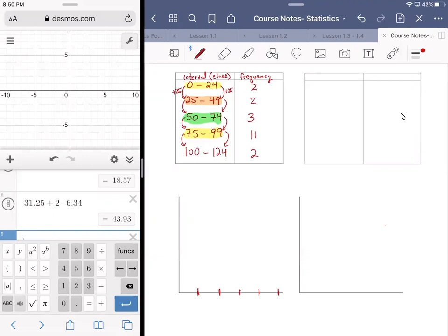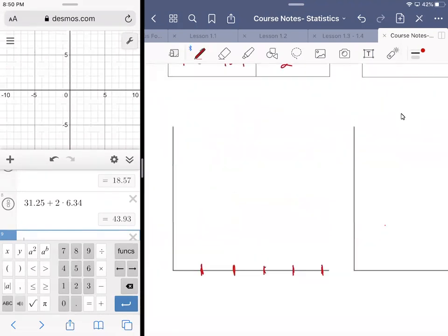The intervals go on the horizontal axis and the frequencies go on the vertical axis. The interval itself is the gap between tick marks. So I have zero to 24, this interval is 25 to 49, 50 to 74, 75 to 99, and then 100 to 124. We label this one intervals. If it has a particular name like grades on a test or shoe sizes, you could label it with that, but you could also just leave it as intervals.